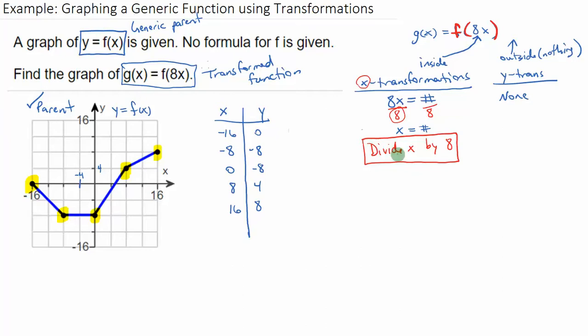So we have one transformation to perform on this function. And so I'll do that. I'll come over to this table of values, which represents this graph. And I'll take all the x values and divide them by 8 to get my new x values. So when I do that, I get this new table of values. (-16)/8 = -2, (-8)/8 = -1, 0/8 = 0, 8/8 = 1, 16/8 = 2. And my y values do not change because my transformation says divide x by 8. And that's it.